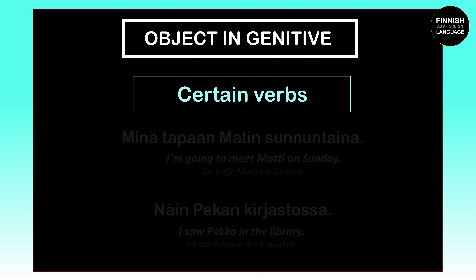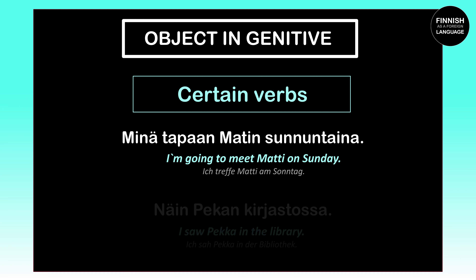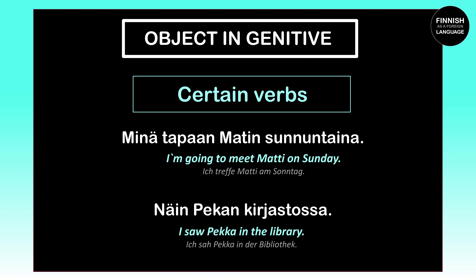An object can also appear in the genitive case after certain verbs. For example, 'Minä tapaan Matin sunnuntaina' means 'I'm going to meet Matti on Sunday.' We have the verb 'tavata,' meaning 'to meet,' and because of this verb, 'Matti' has to stand in the genitive case, becoming 'Matin.' Another example: 'Näin Pekan kirjastossa' means 'I saw Pekka in the library.' The verb 'nähdä,' meaning 'to see,' requires the object in the genitive case, so 'Pekka' changes to 'Pekan.'